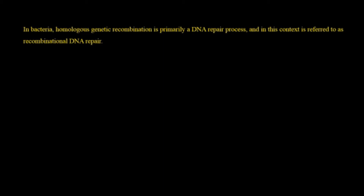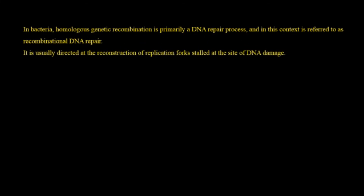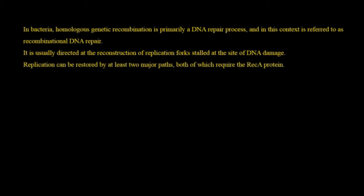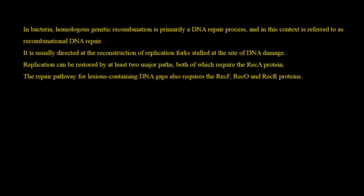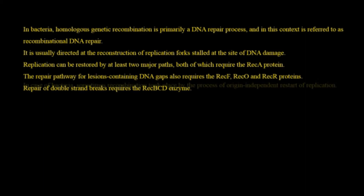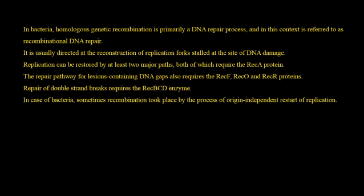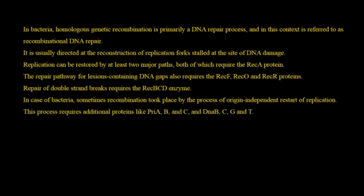In bacteria, homologous genetic recombination is primarily a DNA repair process, referred to as recombinational DNA repair. It is usually directed at the reconstruction of the replication fork at the site of DNA damage. Replication can be restored by at least two major pathways, both requiring RecA protein. The repair pathway for lesion-containing DNA gaps also requires the RecF, RecO, and RecR proteins. Repair of double-strand breaks requires the RecBCD enzyme. Sometimes recombination occurs by origin-independent restart of replication, requiring additional proteins like PriA, PriB, PriC, along with DnaB, DnaC, DnaG, and DnaD.